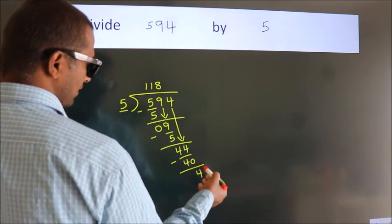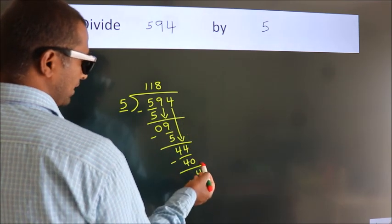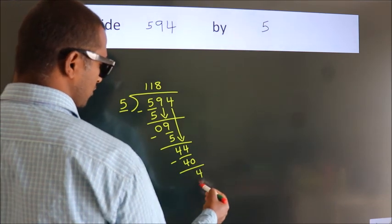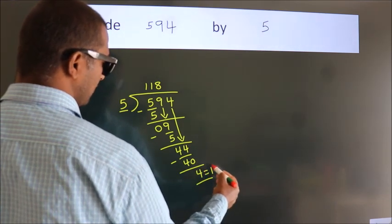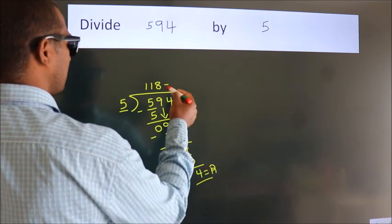After this, no more numbers to bring down, so we stop here. This is our remainder. This is our quotient.